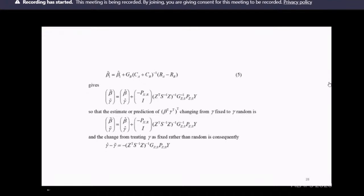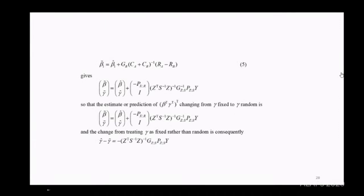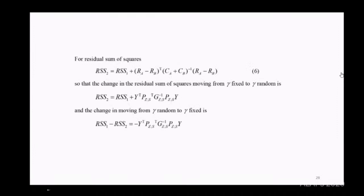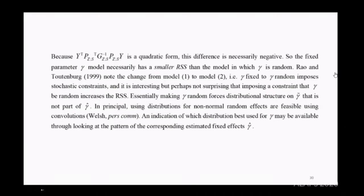I think the signs of these things are rather dependent on Y. It's not simply a case of one being smaller than the other. It's very much a question of what your data Y is. But for residual sums of squares, that's not true. You'll see the residual sum of squares for the first model has something added to it when you go to the second. When you go from fixed to random, the residual sum of squares increases. This is because this term here is a quadratic form. The fixed parameter model necessarily has smaller residual sums of squares than the one where gamma is random. You're basically applying constraints. Gamma random forces a distributional structure on gamma tilde not part of gamma hat.